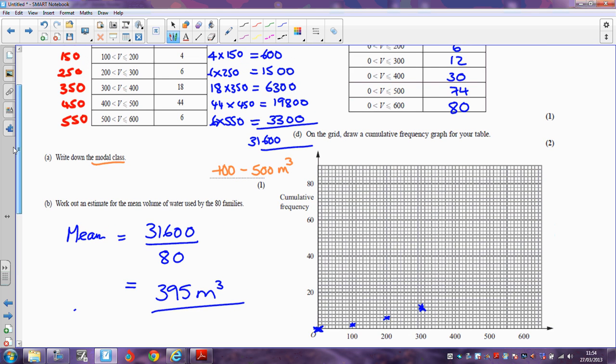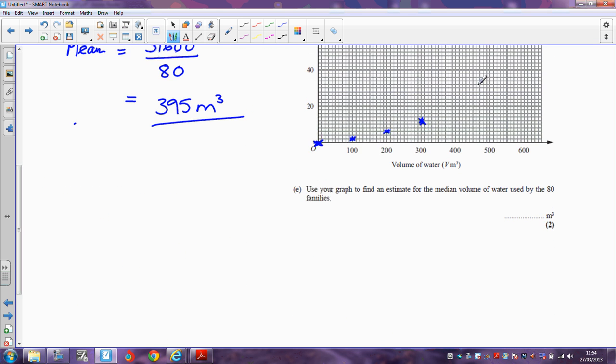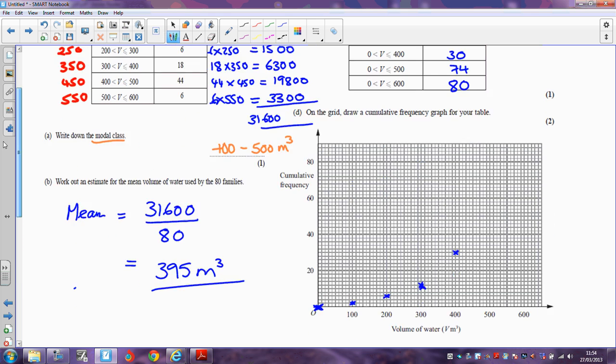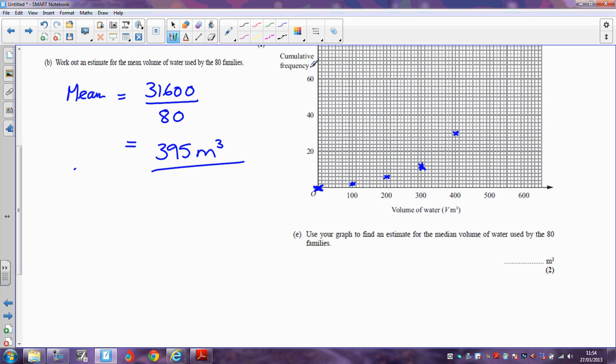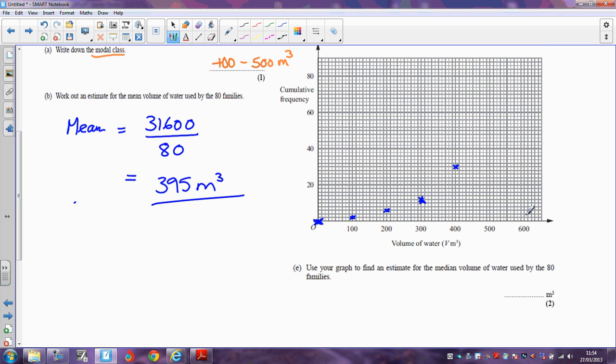30 families used less than 400, so 30 families, so there's 400, 30 families is there, halfway between 20 and 40. 74 families used less than 500, so we have 500. Now, here's 70, 40 families are there, and then all 80 families used less than 600.